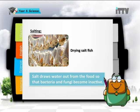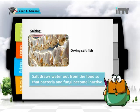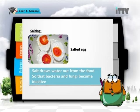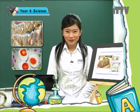Salt draws water out from the food so that bacteria and fungi become inactive. Other types of food that include salting are salted eggs. Not only fish and eggs can be salted — some vegetables can also be salted. When you go to the market, you can ask mummy to point out other examples of salted vegetables.